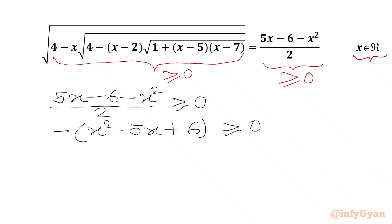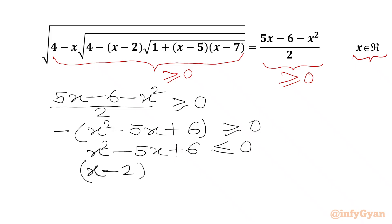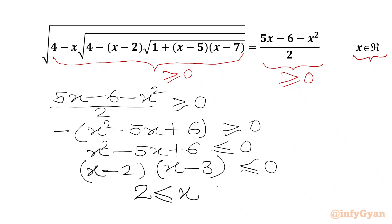Multiplying both sides by minus 1, the inequality reverses: x² - 5x + 6 ≤ 0. Factorizing the left-hand side gives (x - 2)(x - 3) ≤ 0. We conclude that x must lie in the interval [2, 3] inclusive.